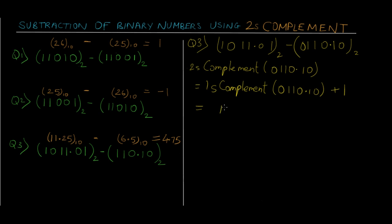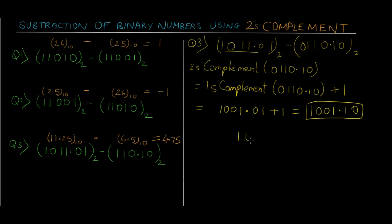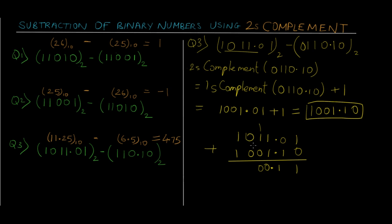2's complement of 0110.10 equals 1's complement of that same number plus 1. That gives us 1001.01 plus 1, which equals 1001.10. Now we need to add this with the first number: 1011.01 plus 1001.10.